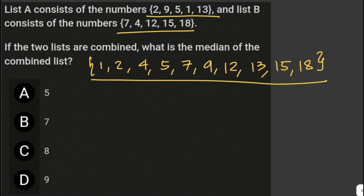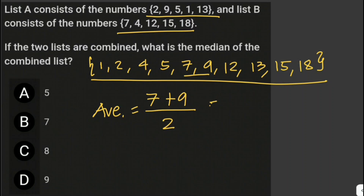Now finding the median — the median is the middle of this data set. In the case that the data set contains an even number of numbers, we get the average of the two middle numbers — we add them and divide by 2. We have 10 numbers total, so the two middle numbers are 7 and 9. So 7 plus 9 divided by 2 is 16 over 2, which equals 8. The answer is letter C.